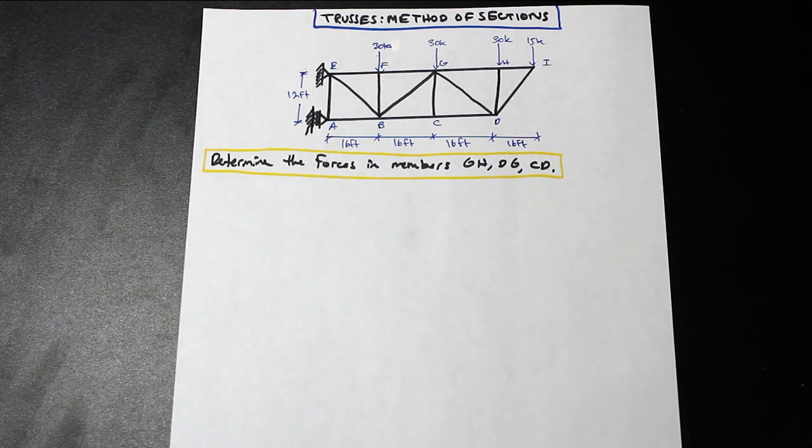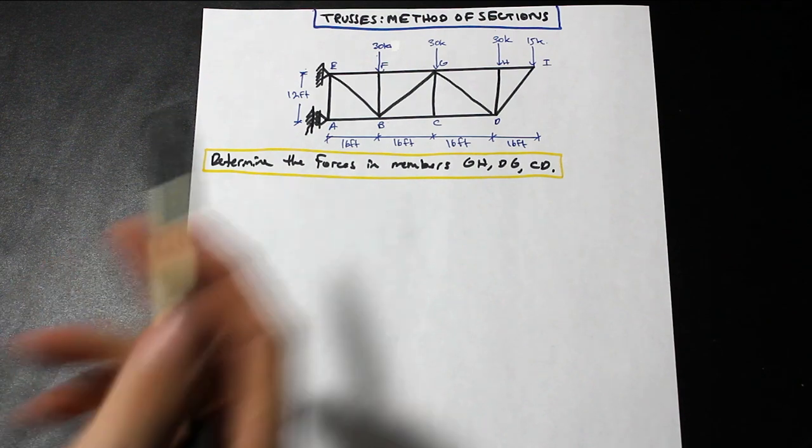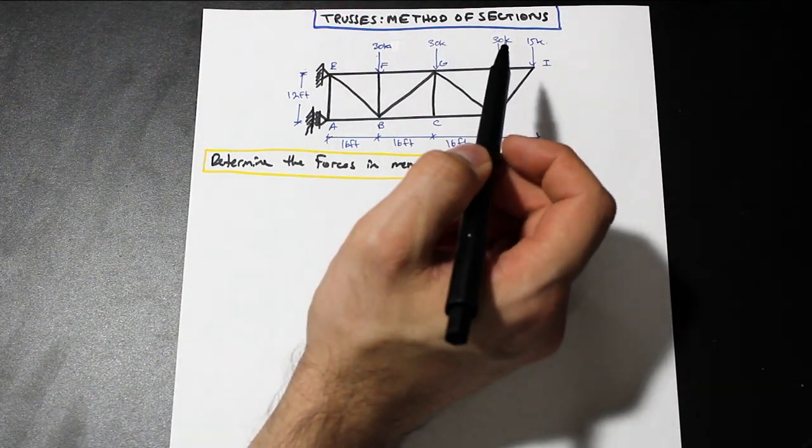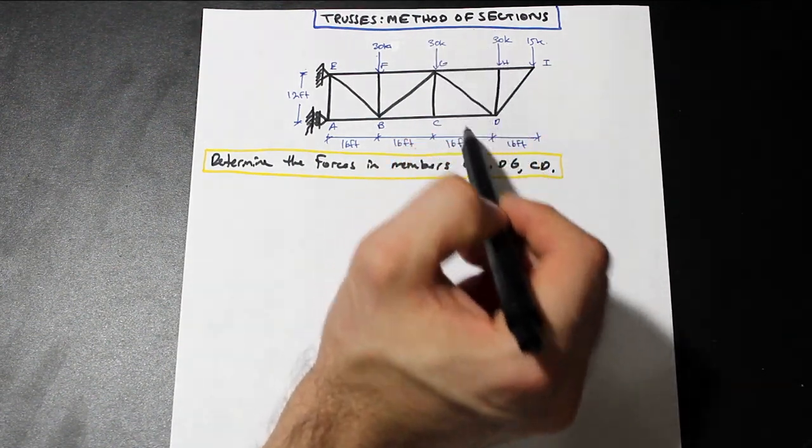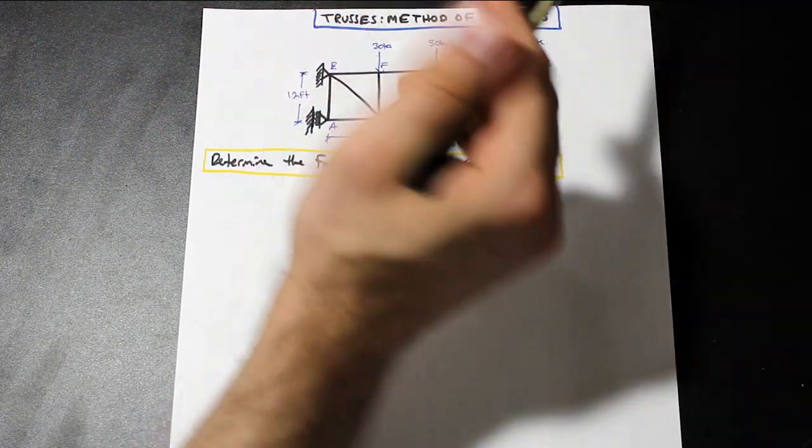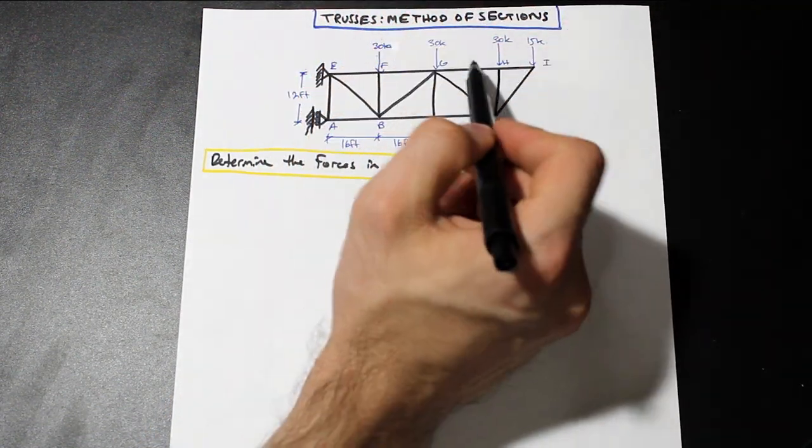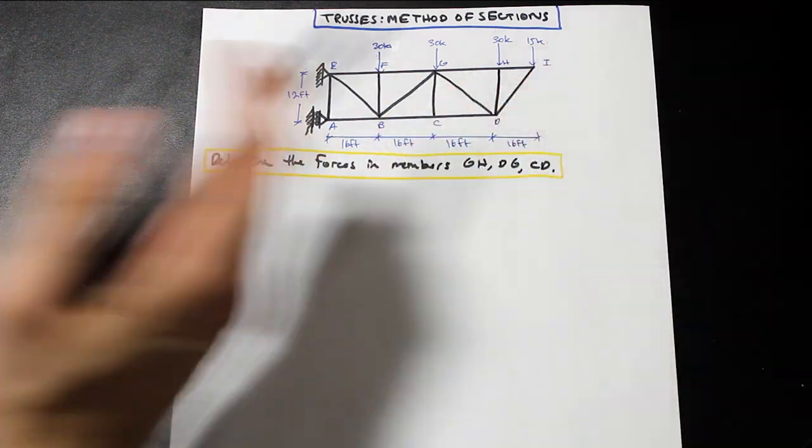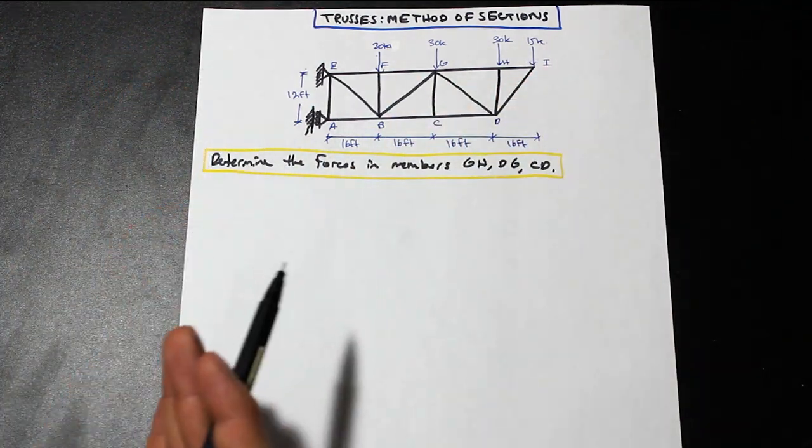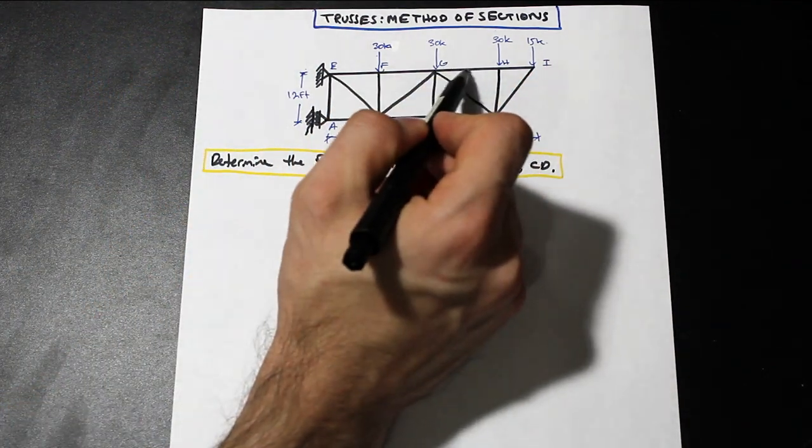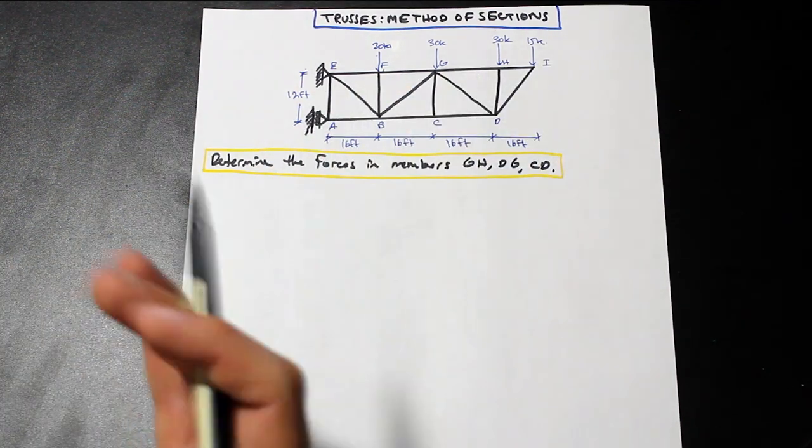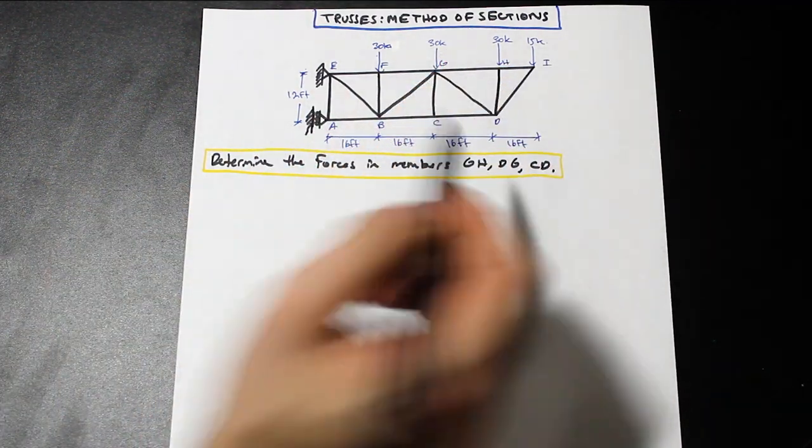So what the method of sections allows us to do is we're just going to make a cut in the beam. When I was first learning strength of materials, I was kind of confused by what they meant by cut. But what essentially it means is you're separating the truss into two sections. And wherever you cut, the internal forces of the members that you cut are now no longer internal because they're no longer canceling each other out within the member. So the equilibrium conditions are no longer satisfied.